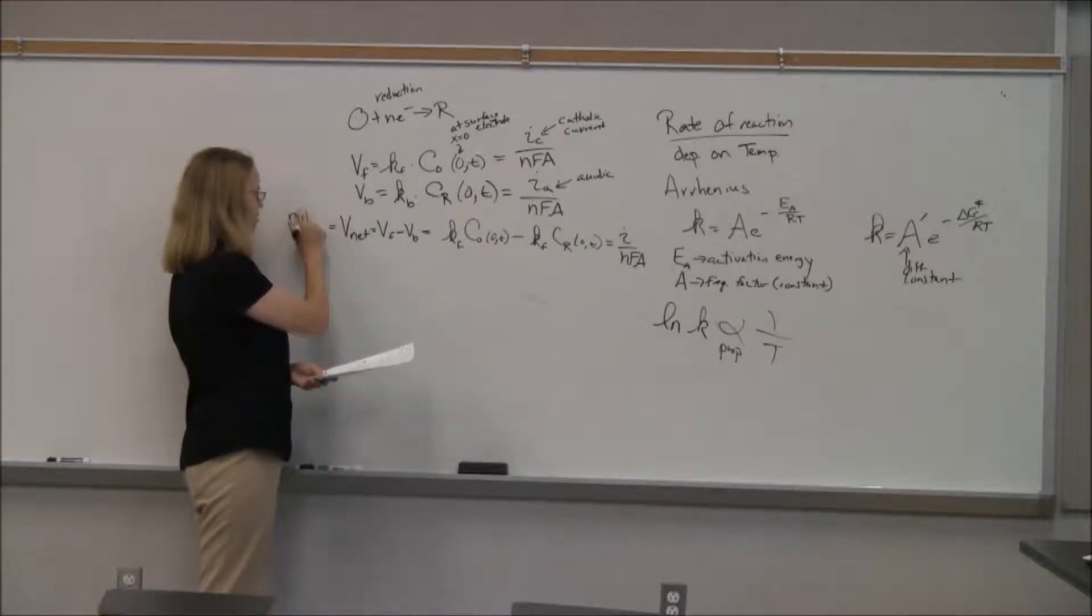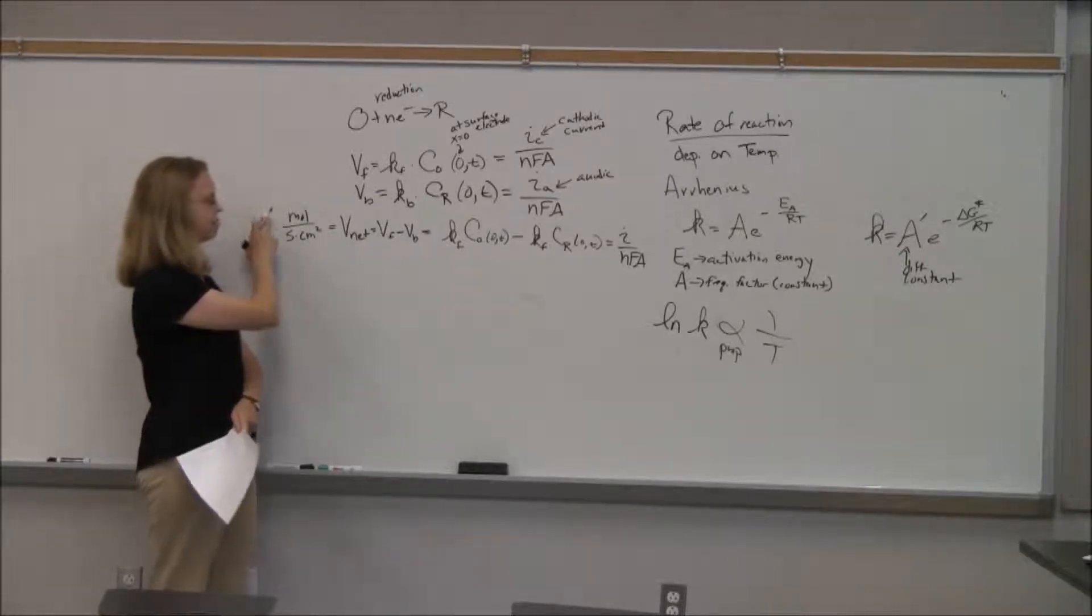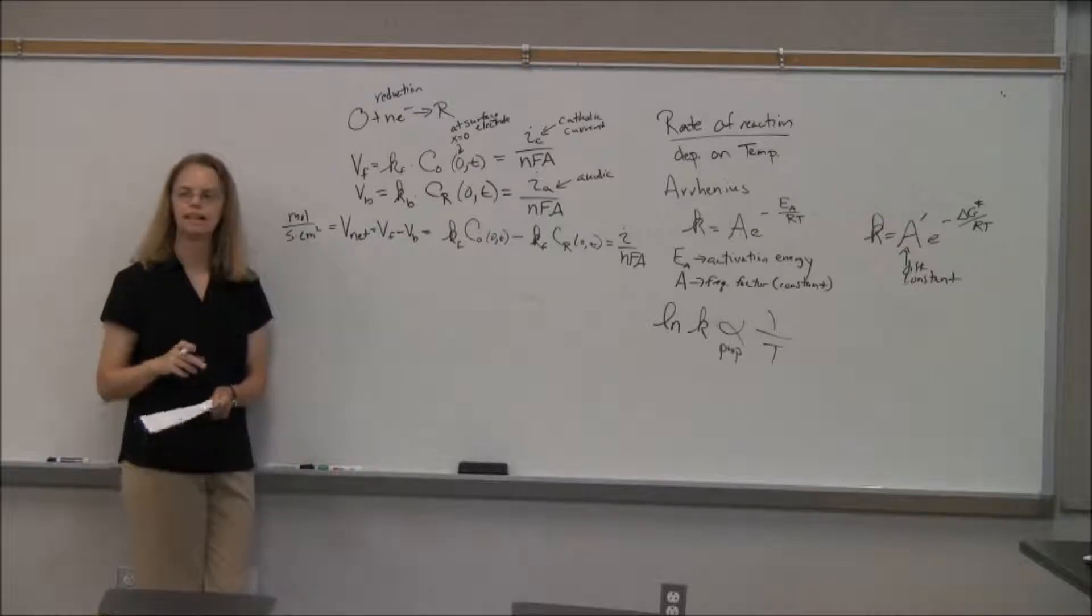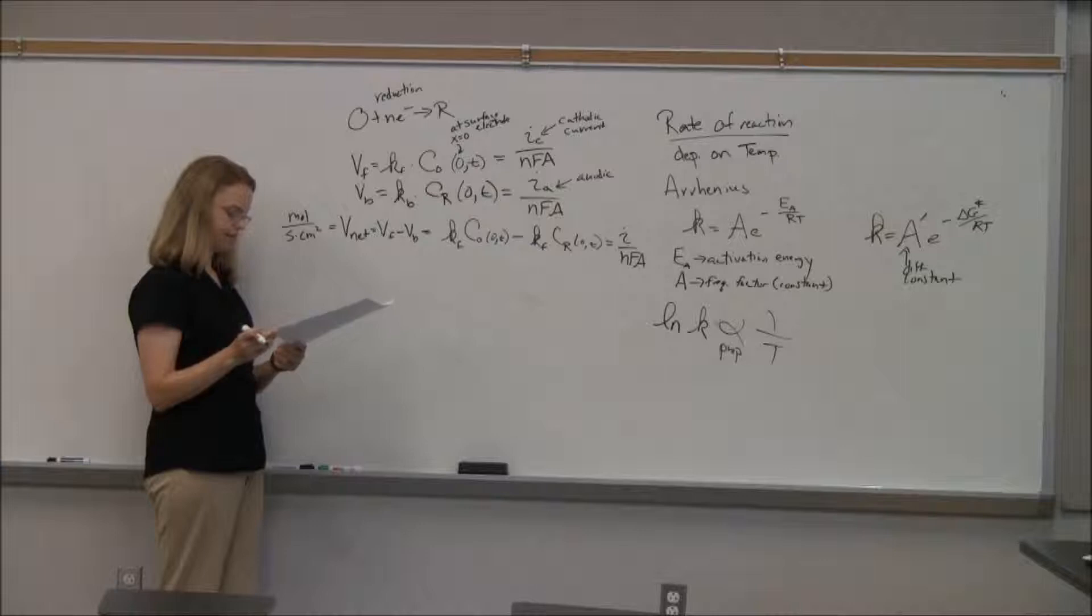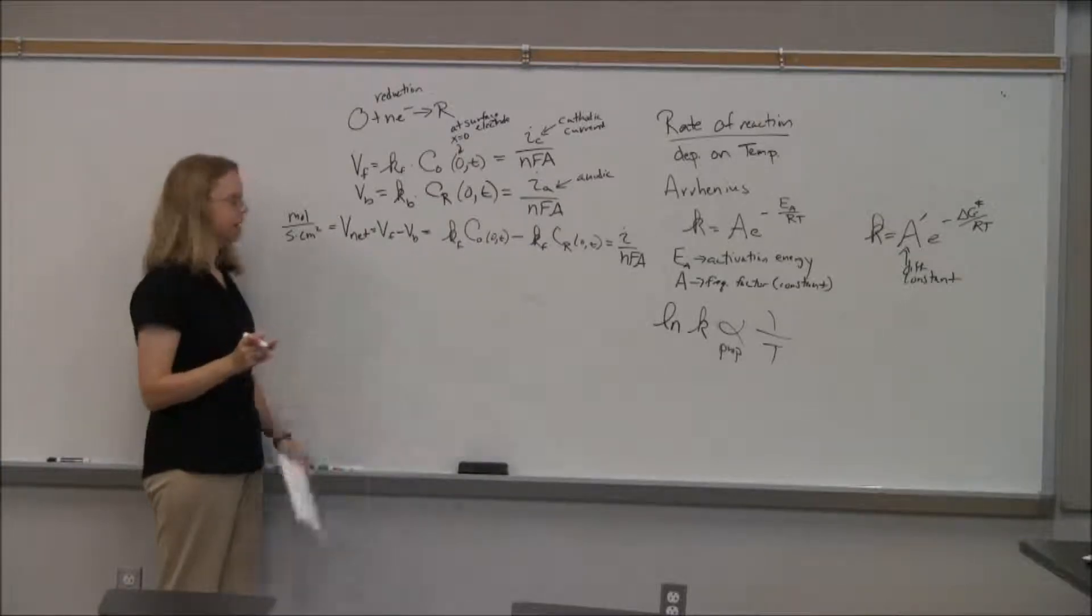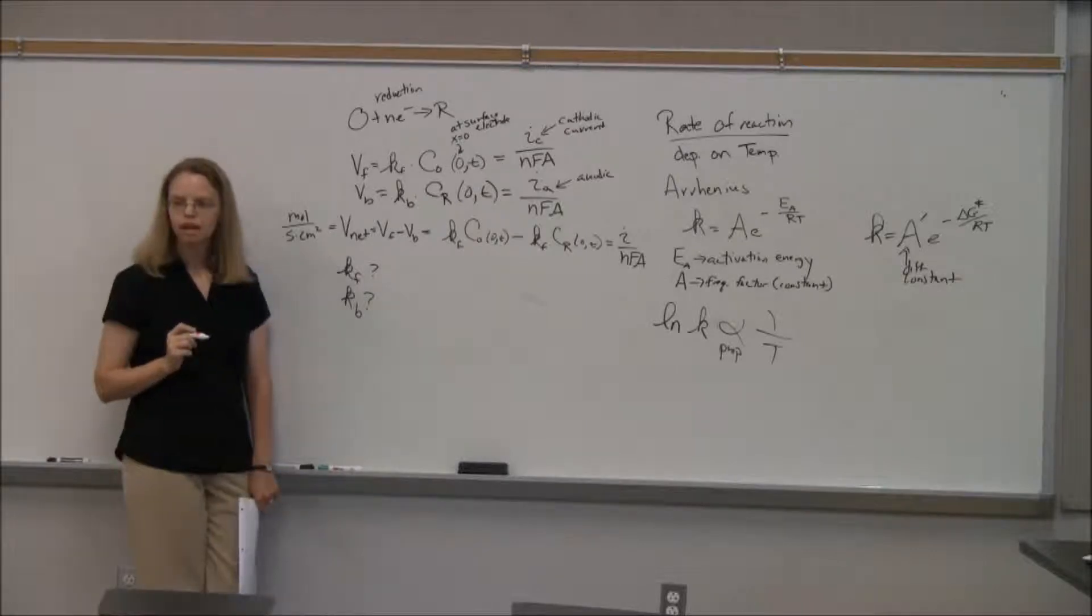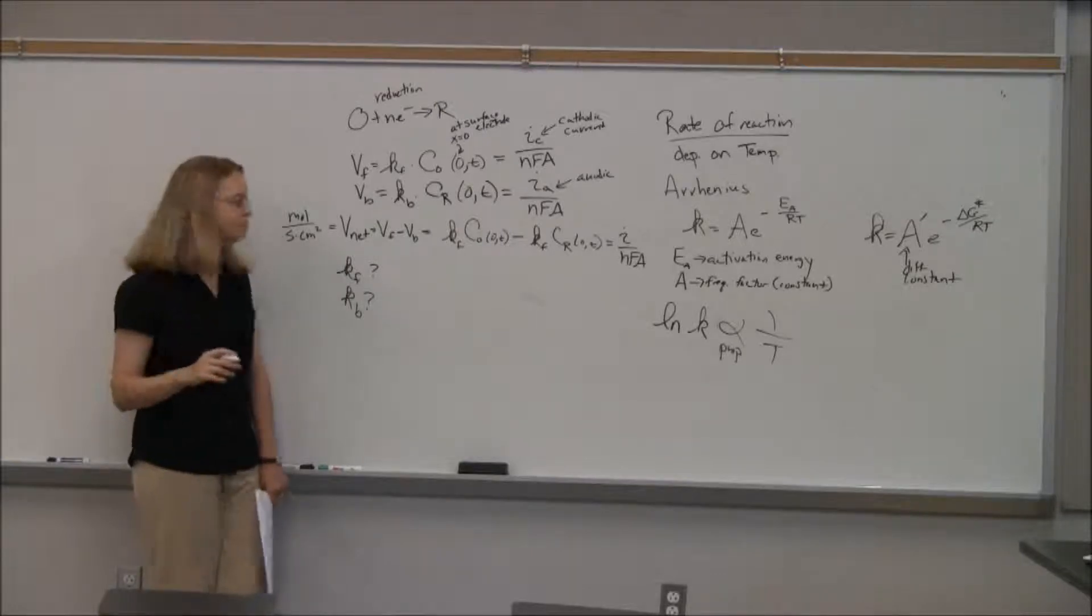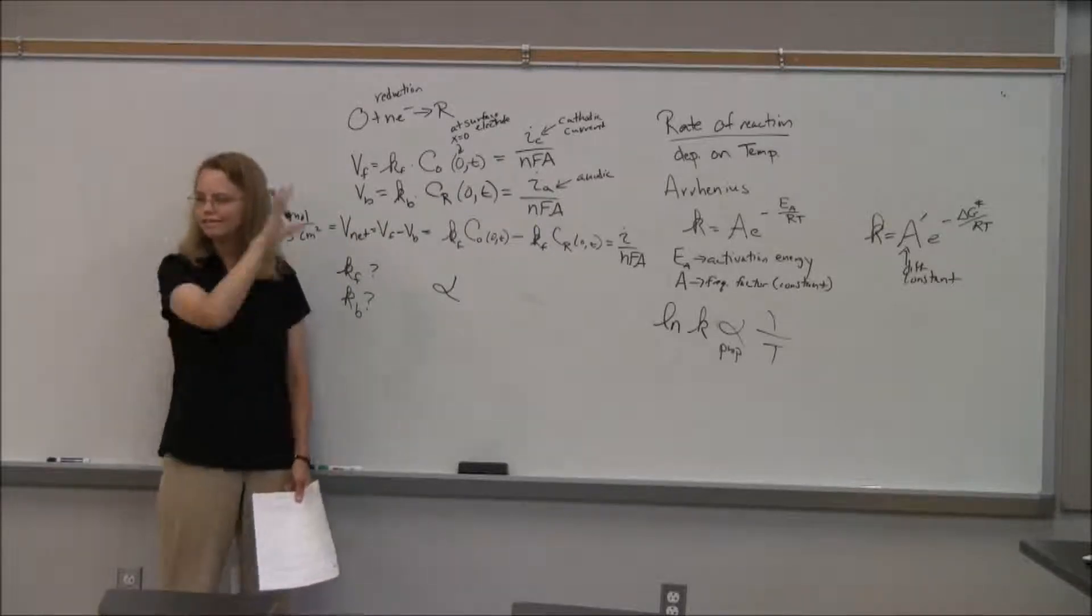So we said V net would be V forward minus V backwards. So we're going to do that. Kf times the concentration of O at the surface minus Kb times the concentration of R at the surface. And that's going to be equal to I over NFA, the net current. These velocities are in units of, in case it's not obvious, moles per second per centimeter squared. I should have said earlier. It might help.